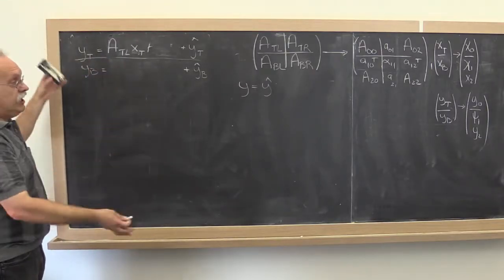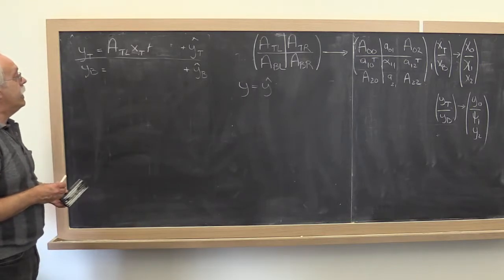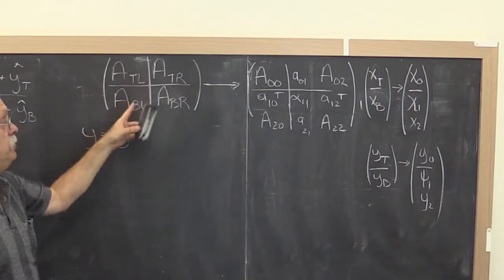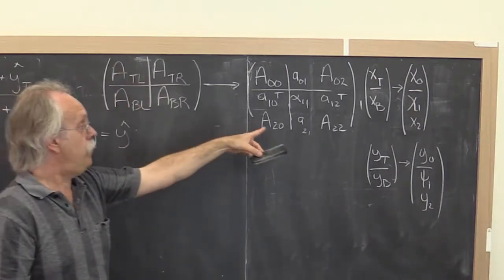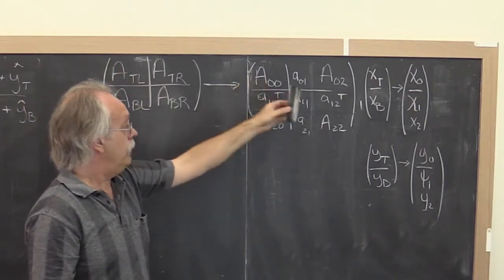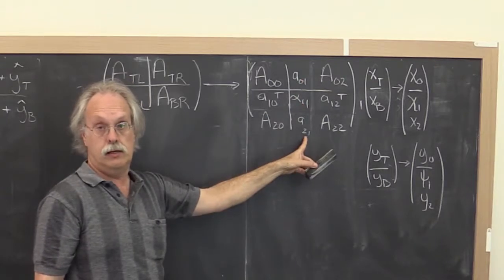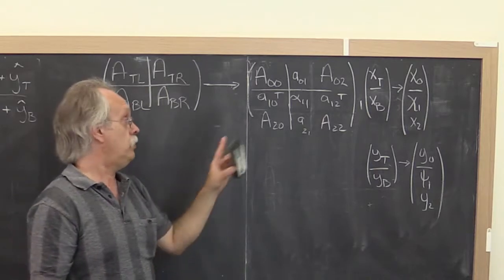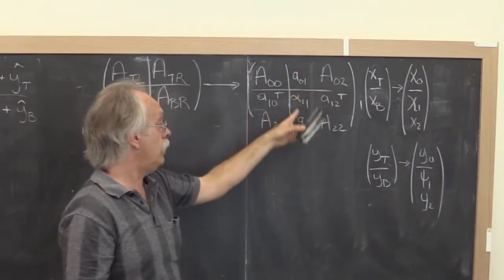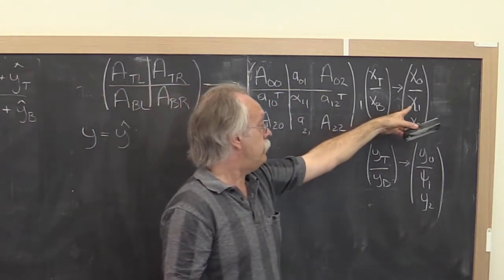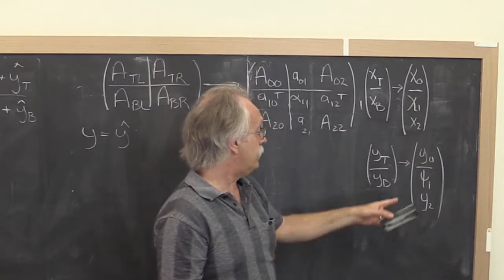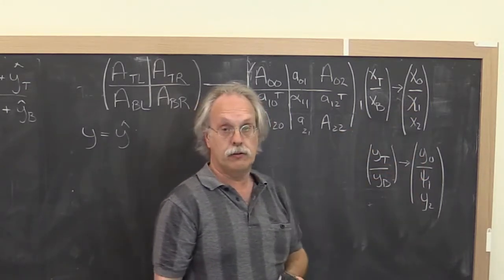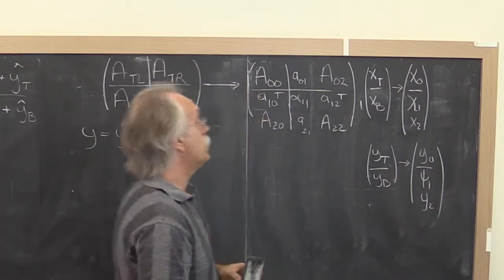Okay, so now imagine getting into the loop. And now what you would like to do is say, I repartition my matrix exposing a row and a column. What is the state in terms of those exposed pieces? And notice that if you expose a row and a column of a, then you must expose an element of x, the top element of x bottom, and the top element of y bottom.